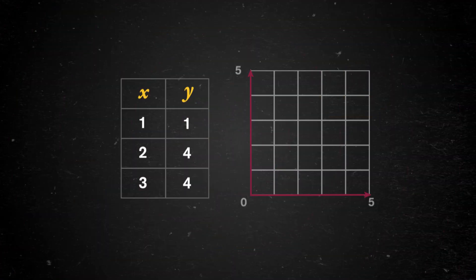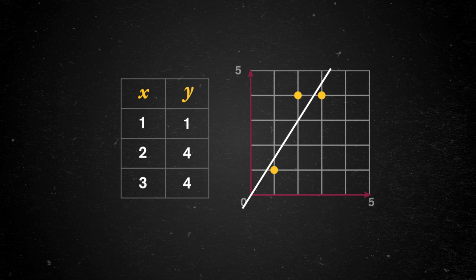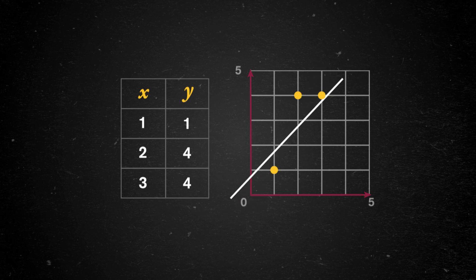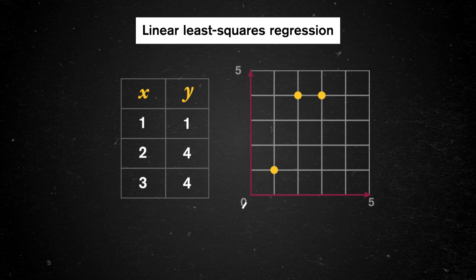You might see this done in your stats class rather than your algebra class. Linear regression combines two of college algebra's greatest hits: solving linear and quadratic equations. We can give linear regression a try with three points, but to find a more accurate trend, we really want way more points — at least 30. Our challenge is to draw a line that mimics the data the best, meaning a line that's as close to every data point as possible, using something called linear least squares regression.